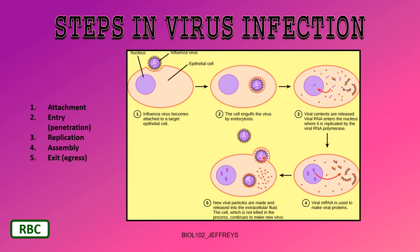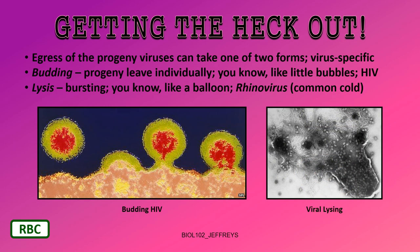There are a couple of different ways viruses can exit cells. Egress of progeny viruses can take one of two forms, and they are virus-specific. In the case of budding, progeny leave individually, like little bubbles — HIV is an example. Here we see HIV progeny viruses budding off of a T4 lymphocyte. Eventually the T4 lymphocyte will die.